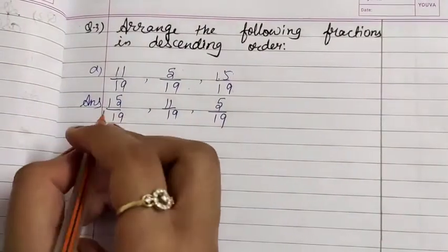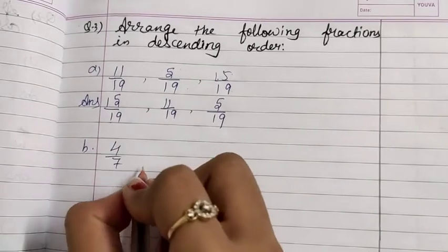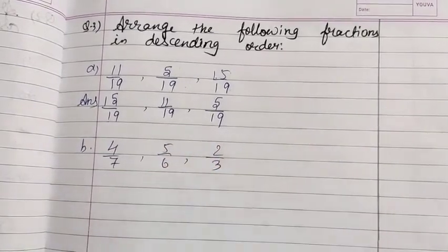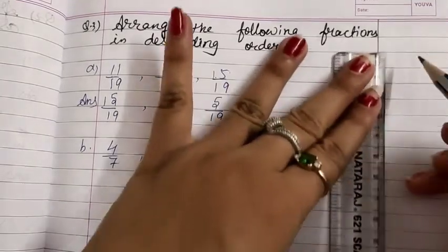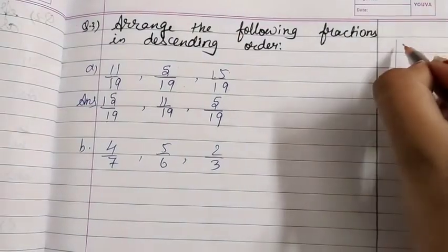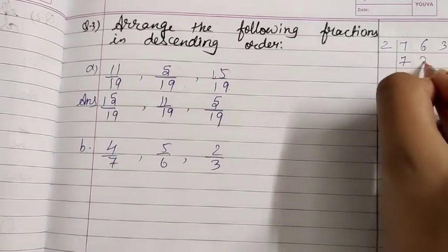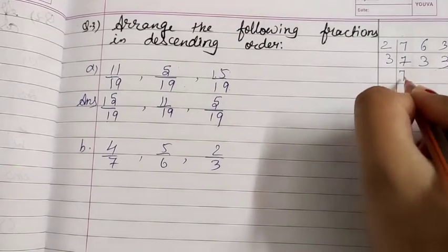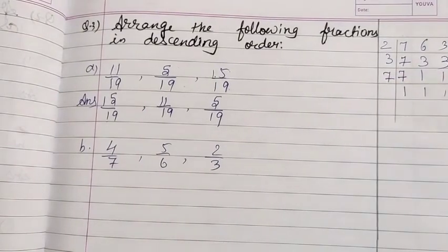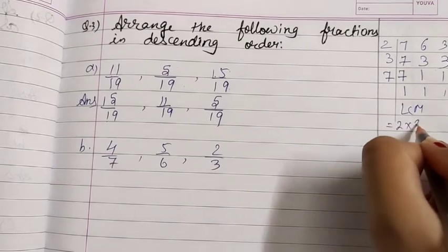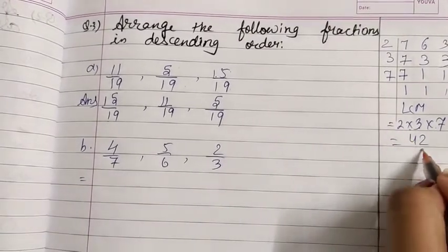Number B is 4 upon 7, 5 upon 6, and 2 upon 3. All denominators are different, so we take LCM of 7, 6, and 3. Since 2 does not divide 7, 7 stays as is; 6 ÷ 2 = 3 and 3 ÷ 3 = 1; 7 ÷ 7 = 1. LCM = 2 × 3 × 7 = 42. So we need to make all denominators 42.